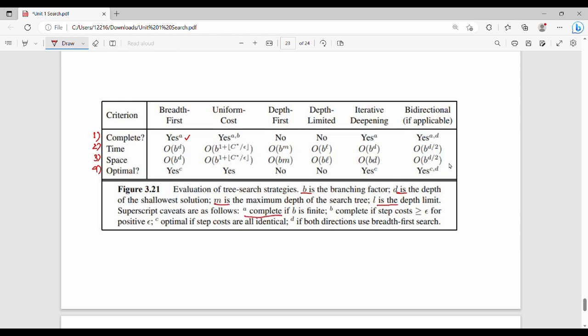Complete if b is finite. So superscript a is complete if step cost is greater than epsilon. So c is optimal if step cost is identical. So c is optimal if step cost is identical. So you can see it. So breadth-first search is complete, time complexity is O of b power d, that is space O of b power d, optimal is yes.